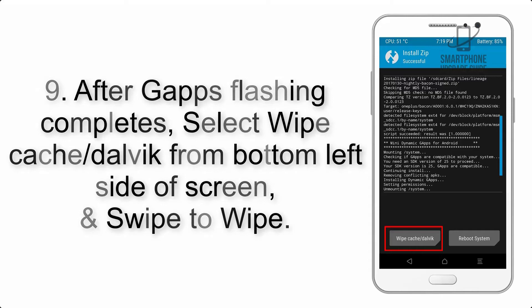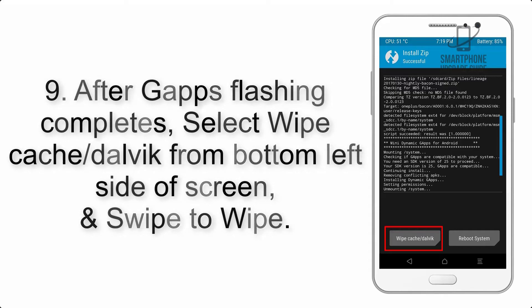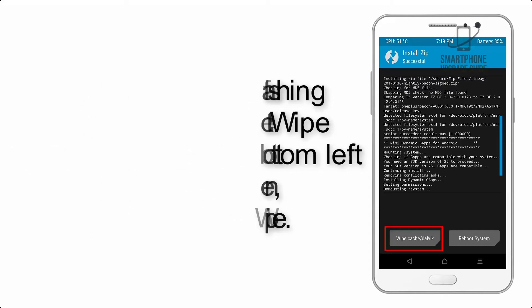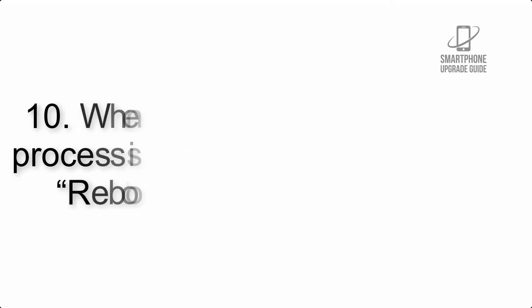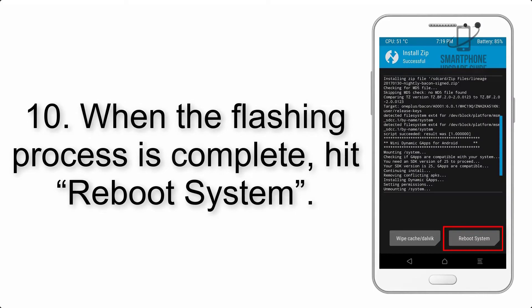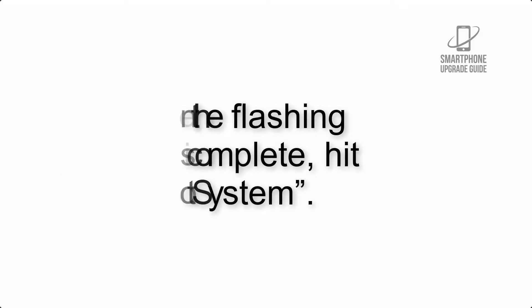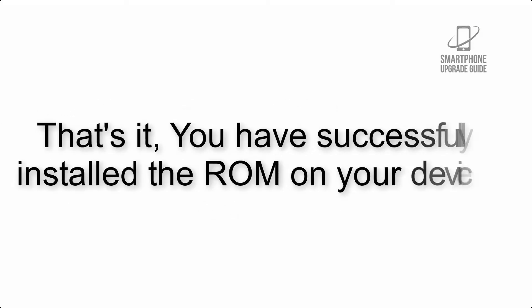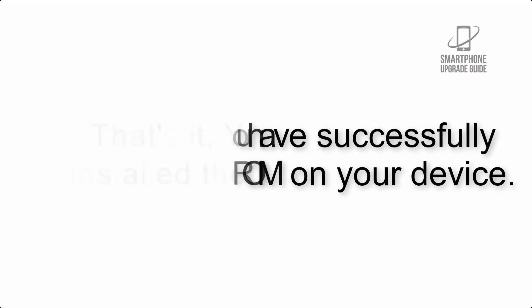Step 9: After GApps flashing completes, select Wipe Cache and Dalvik from the bottom left side of the screen and swipe to wipe. Step 10: When the flashing process is complete, hit Reboot System. That's it — you have successfully installed the ROM on your device.